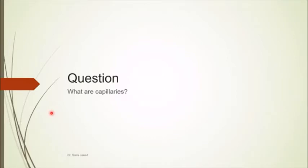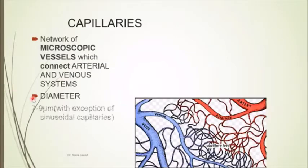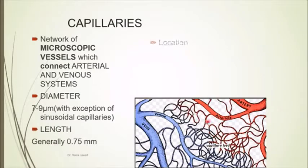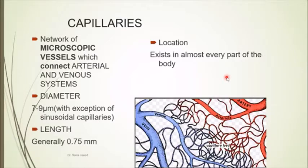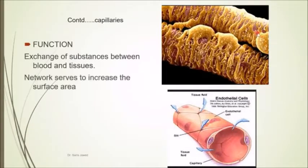Capillaries are a network of microscopic vessels. When we dissect a cadaver, we can see the large arteries as well as veins, but capillaries are microscopic vessels that connect the venous system with the arterial system. They have a very small diameter of about seven to nine micrometers, and they exist in almost every part of the body because every tissue needs nutrients and every tissue needs to get rid of waste products.